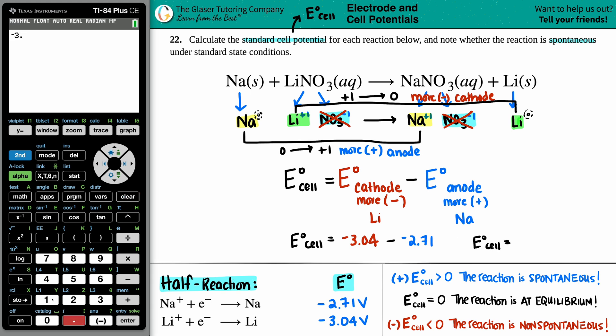Let's find out what that E cell is. Negative 3.04 minus a negative 2.71. That looks good to me. That's a negative 0.33 and that's in volts. So here is your E cell.